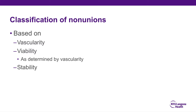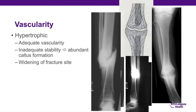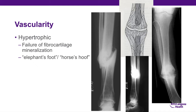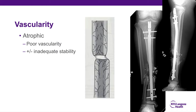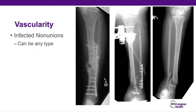How do we classify non-unions? We classify them based on vascularity, viability as determined by vascularity, and stability. A hypertrophic non-union has adequate vascularity but inadequate stability, producing abundant callus formation and widening of the fracture site. There's a failure of fibrocartilage mineralization, developing an elephant's foot or horse's hoof — very recognizable on x-ray. Oligotrophic is in-between: adequate vascularity with viable bone ends but insufficient stability and less motion than hypertrophic — it looks like it's trying hard to heal but just not making it. Atrophic non-union has poor vascularity, with or without inadequate stability. There are also infected non-unions, which can be any of those three types.